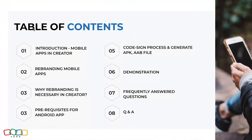Before we get into the rebranding Android apps webinar, I'd like to introduce the topics we'll cover. First, we'll start with an introduction to mobile applications in Zoho Creator, followed by rebranding these mobile applications and why rebranding is necessary. Then we'll cover the configuration prerequisites for Android app rebranding, the code sign process, how to generate APK and AAB files, a quick demonstration, frequently answered questions, and a final Q&A.